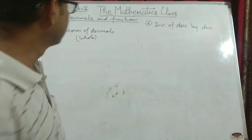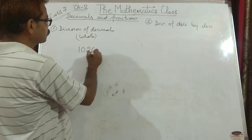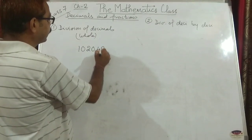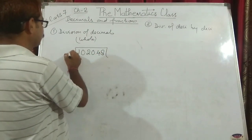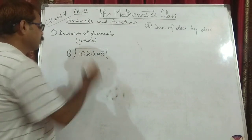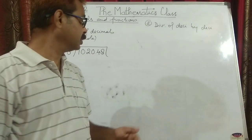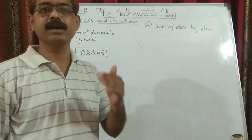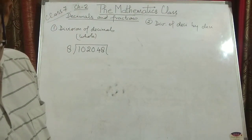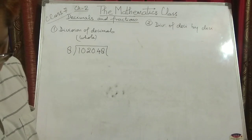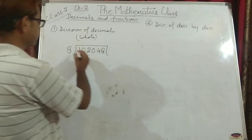Let's take 1020.48 divided by 8. What we need to do? We normalize and do the dividend process as we have been doing. Finally, we line up the decimal point in the quotient. Let's see how it is.